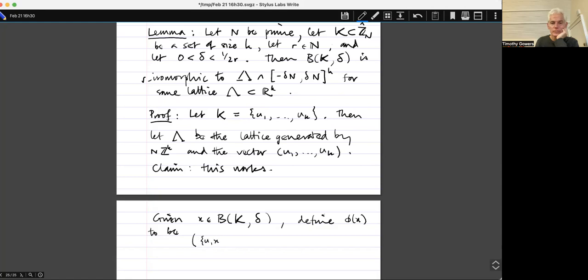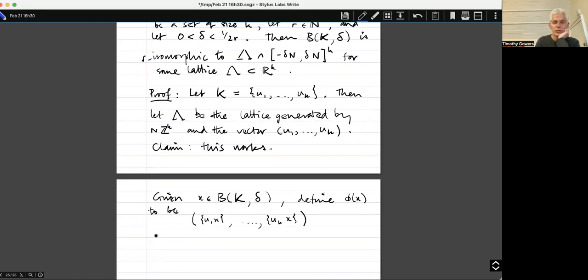And I haven't yet said what this notation means. Where U i X is the residue of least absolute value in, well, congregate to U i X, U i X, U i X mod N. So technically U i X is an equivalence class of, or the residue class of integers. So I'm picking the least absolute value one. So by definition of the Bohr set, the absolute value of U i X is less than or equal to delta N.